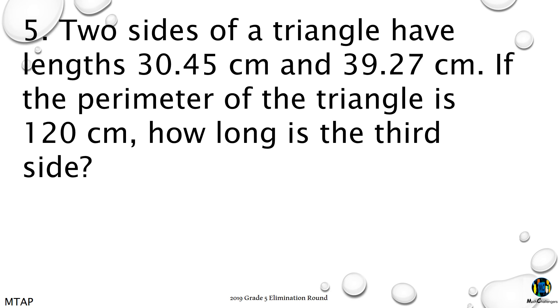5. Two sides of a triangle have lengths 30.45 cm and 39.27 cm. If the perimeter of the triangle is 120 cm, how long is the third side?